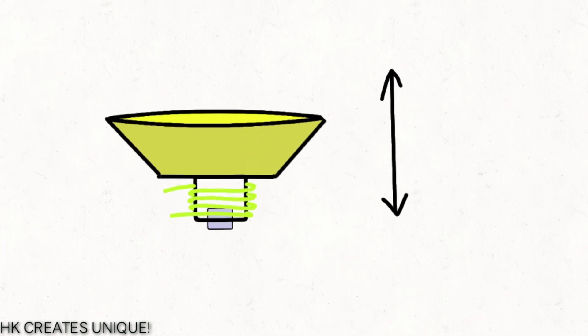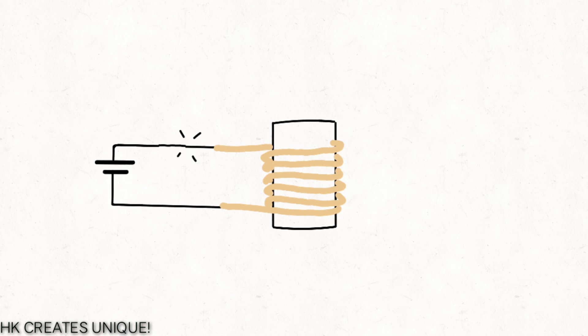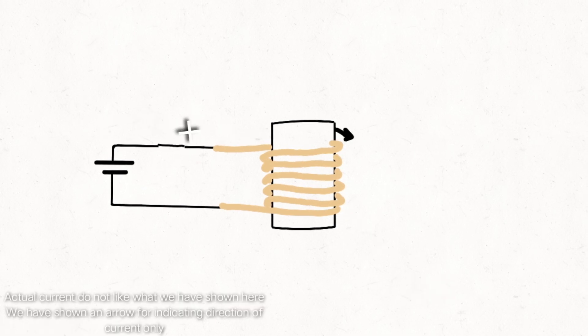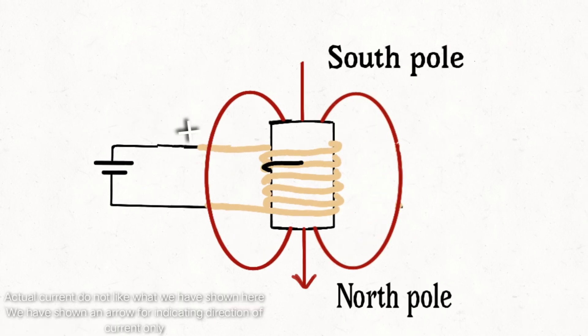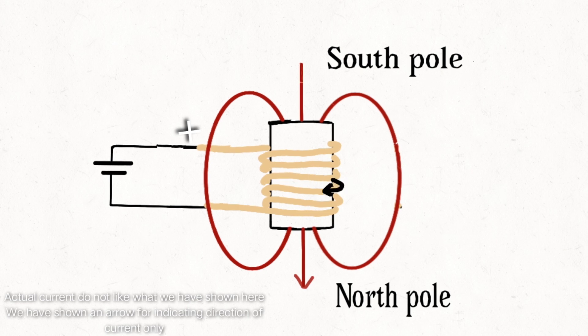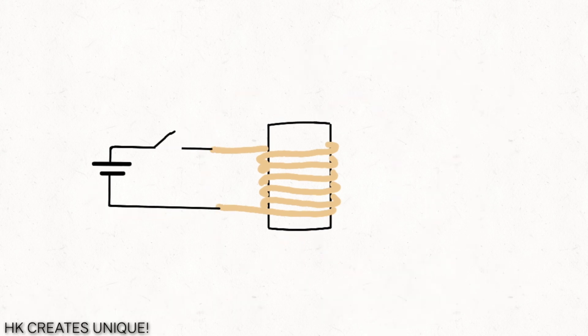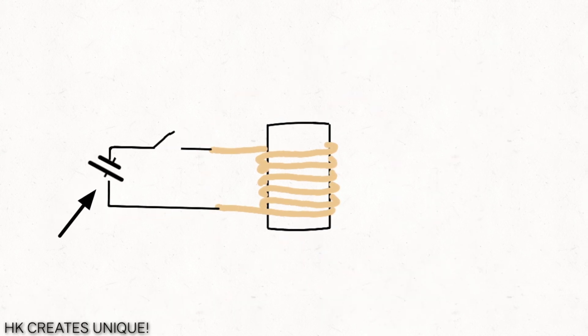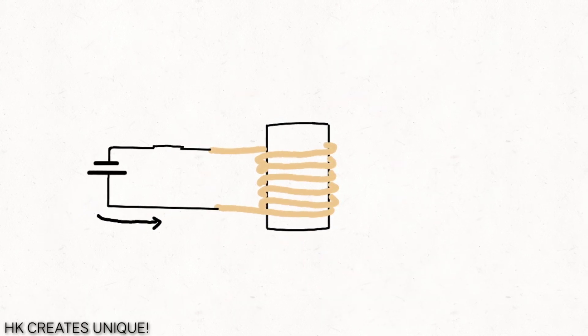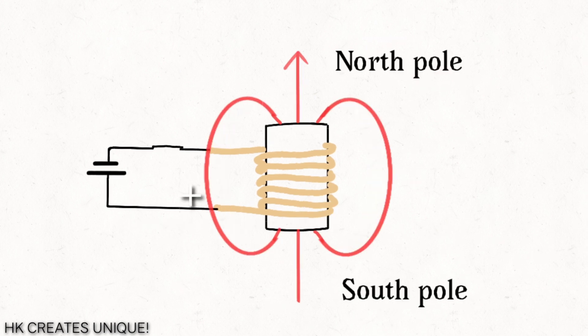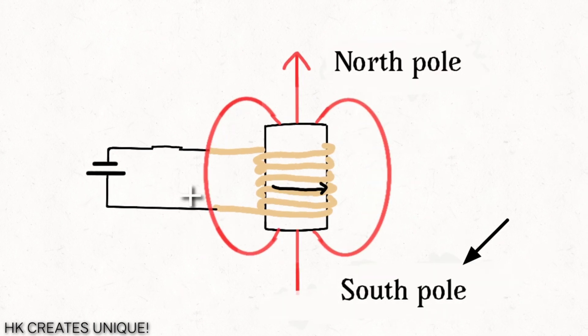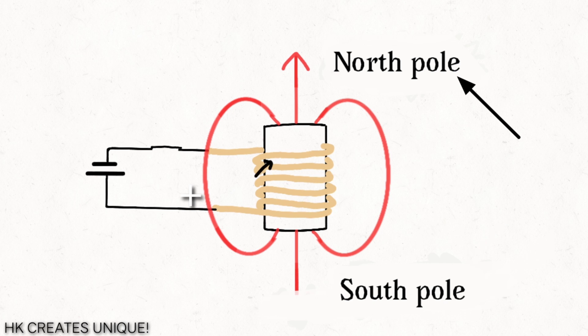We know that when current flows through a coil, magnetic field is produced around it, similar to a bar magnet. It has a north and a south pole. But when the direction of current flow is reversed, the magnetic field direction also reverses—that is, north becomes south and south becomes north.